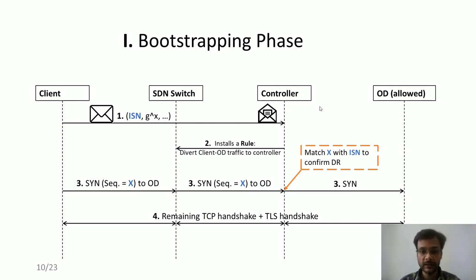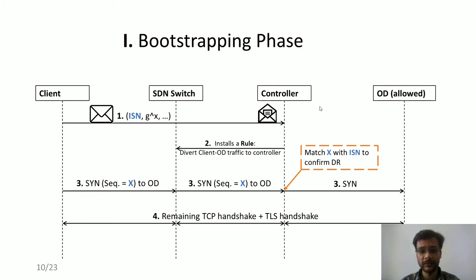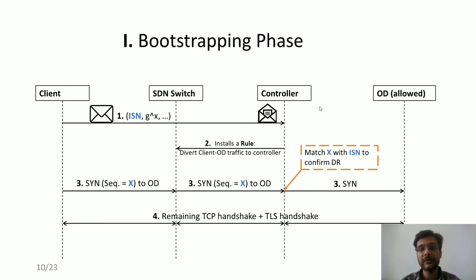The Siege Breaker protocol is divided into three phases: bootstrapping, hijacking, and proxying. The aim of the bootstrapping phase is to let the controller identify decoy routing flows without inspecting non-decoy-routing flows. We achieve this with a new mechanism wherein the client initially informs the controller via an out-of-band channel — in our case, email — that it will be requesting decoy routing service. This email contains information that helps the controller identify the sender as a legitimate decoy routing client.